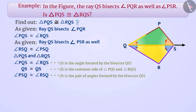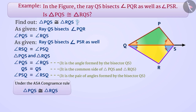Since two angles — angle PQS and angle PSQ — and the included side QS of triangle PQS are equal to the corresponding angles angle RQS and angle RSQ and the included side QS of triangle RQS, therefore, under the ASA congruence criterion, both these triangles are congruent.